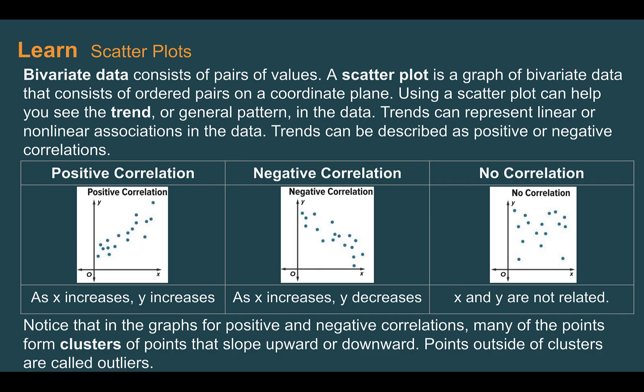Scatter plots. Bivariate data consists of pairs of values. A scatter plot is a graph of bivariate data that consists of ordered pairs on a coordinate plane. Using a scatter plot can help you see the trend or general pattern in the data. Trends can represent linear or nonlinear associations in the data, and they can be described as positive or negative correlations.